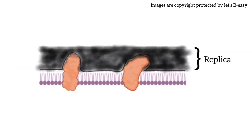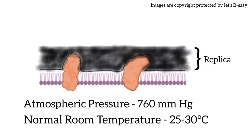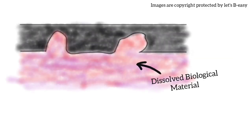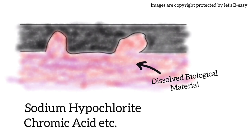After the replica has been made, the sample is brought to atmospheric pressure and allowed to warm to room temperature. This process is done for the strengthening of the platinum and carbon. In the next step, the biological material is removed from the replica using sodium hypochlorite solution, chromic acid, or other cleansing agents.